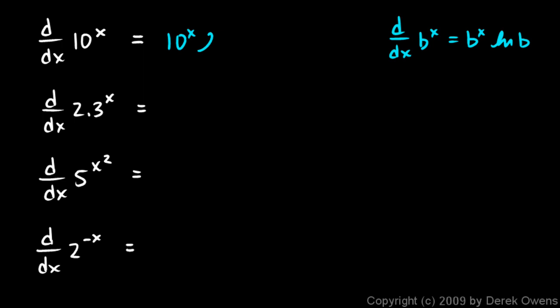The derivative of 10^x is just 10^x times the natural log of 10 — really easy. The derivative of 2.3^x is 2.3^x times the natural log of 2.3 — pretty simple.